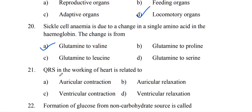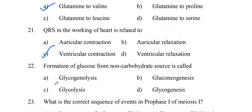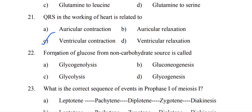QRS in the working of the heart is related to the graph from ECG. The QRS complex represents ventricular contraction. The formation of glucose from a non-carbohydrate source is called gluconeogenesis.